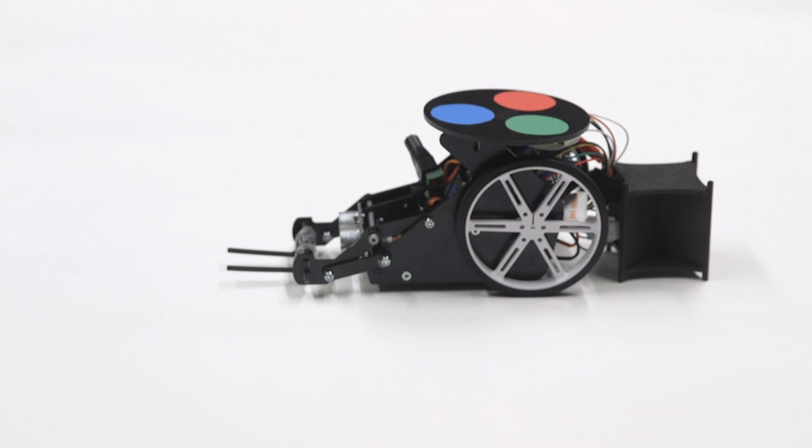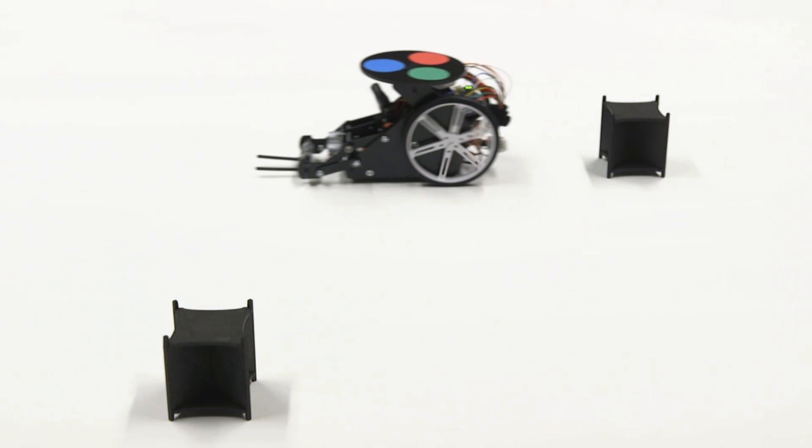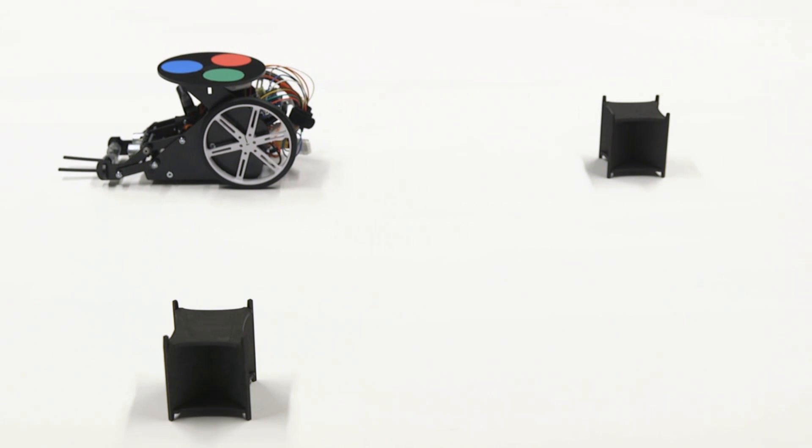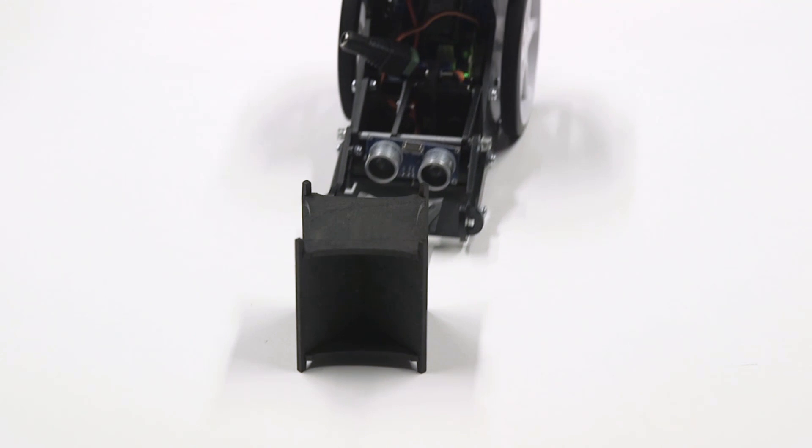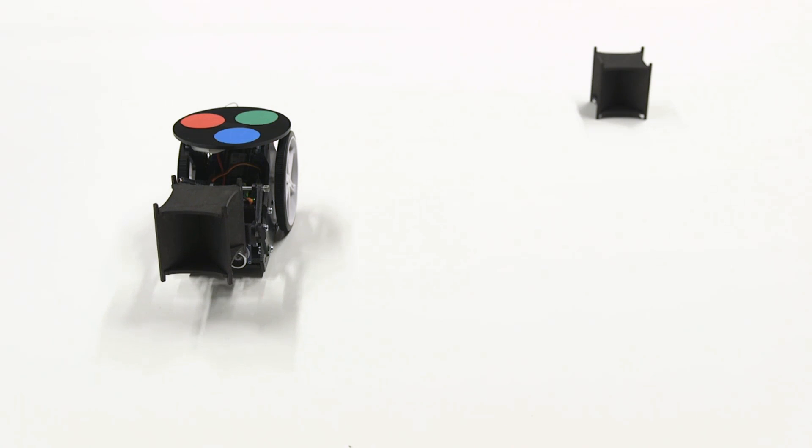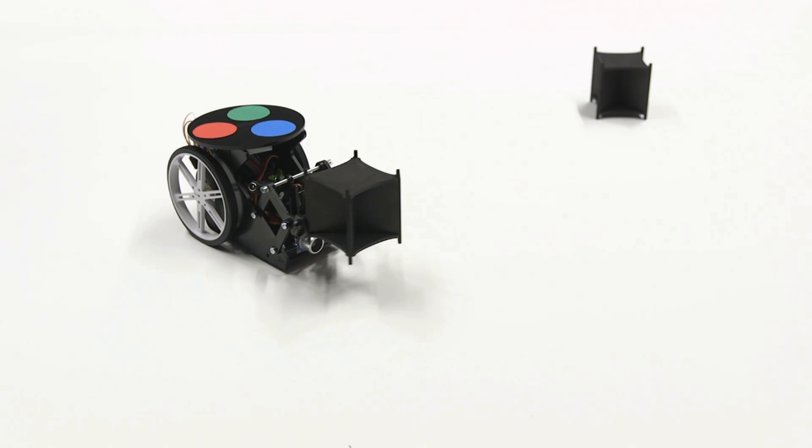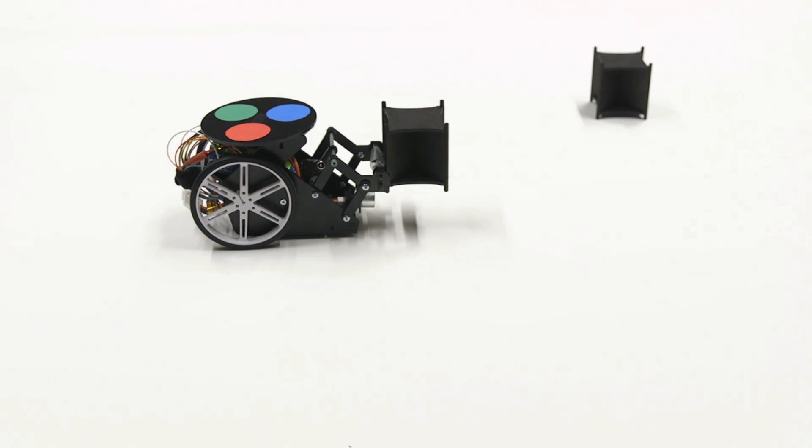In the mobile rover project, we programmed the rover to follow a series of path instructions and to pick up and drop off an object with just its forklift. To track the rover's location, we built a localization algorithm in MATLAB and use that along with the rover's encoded data.